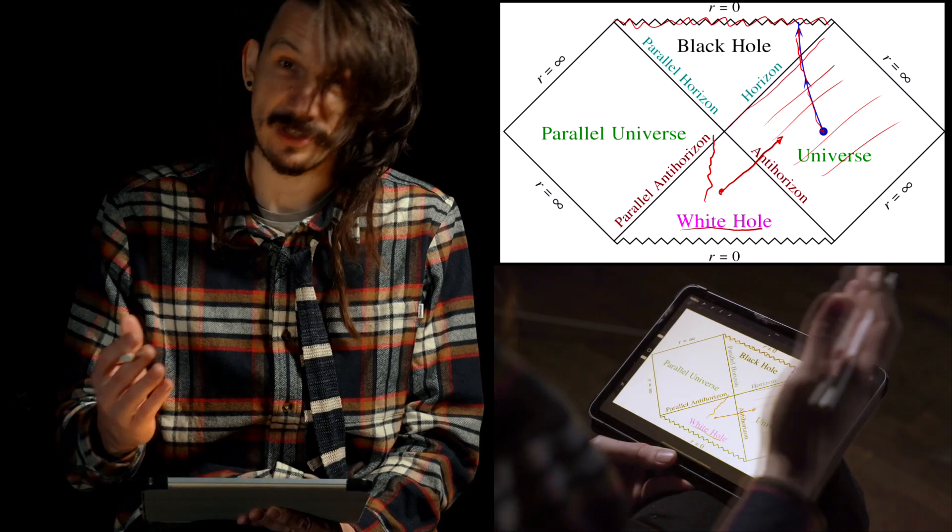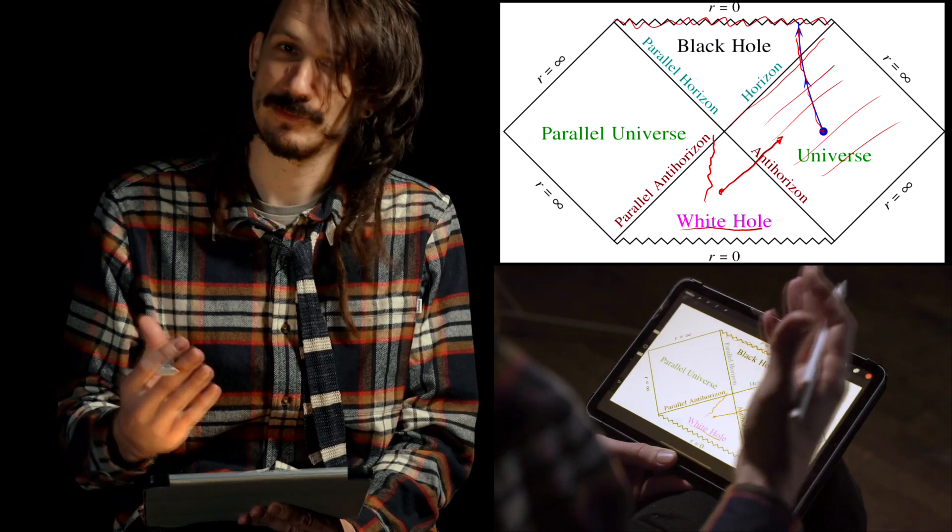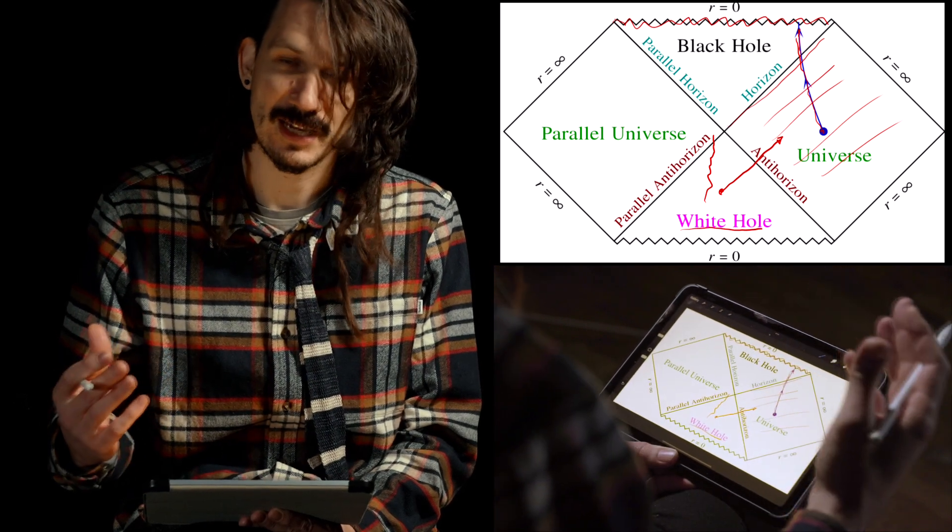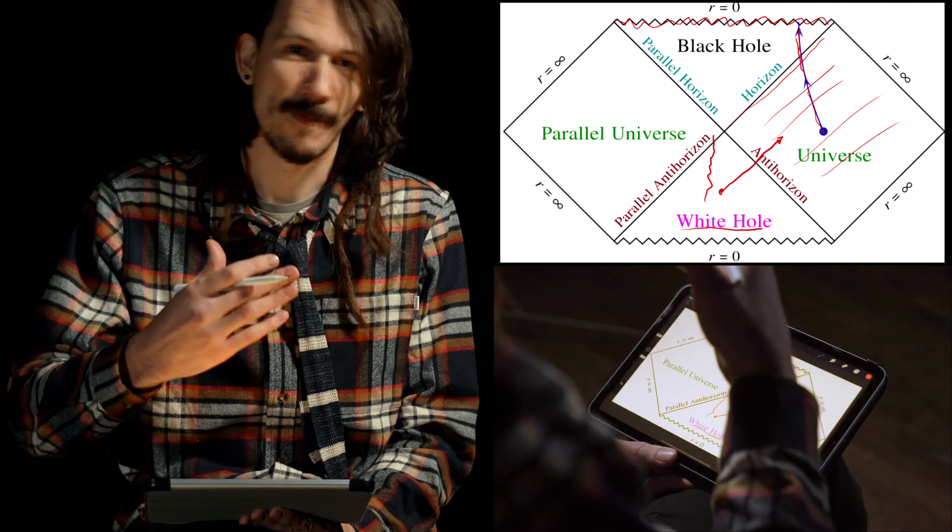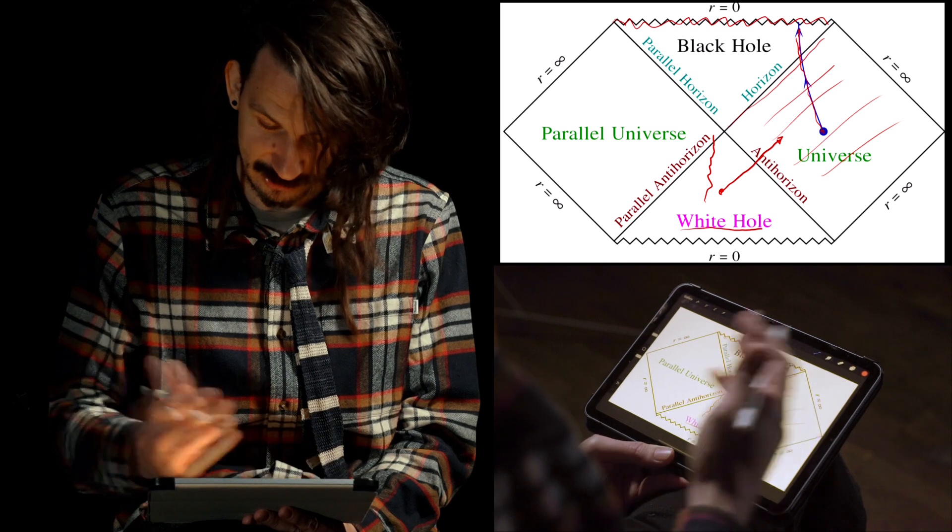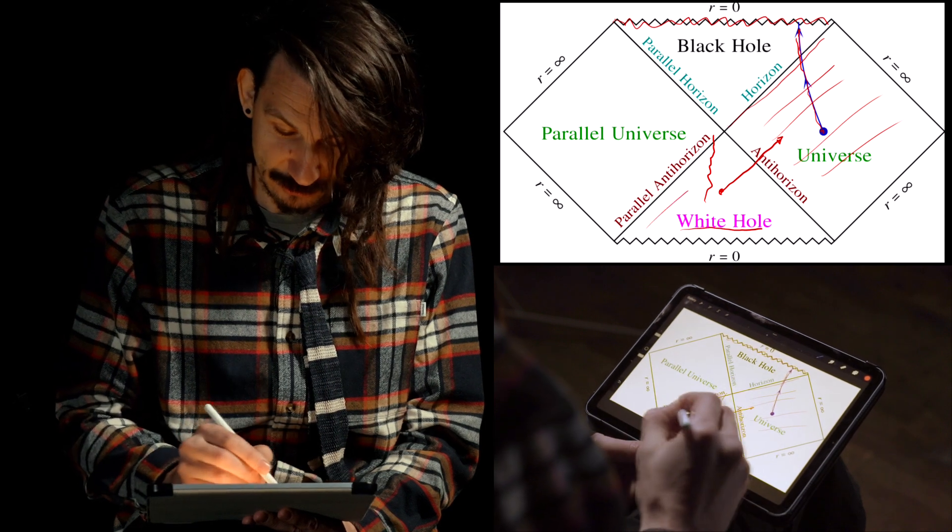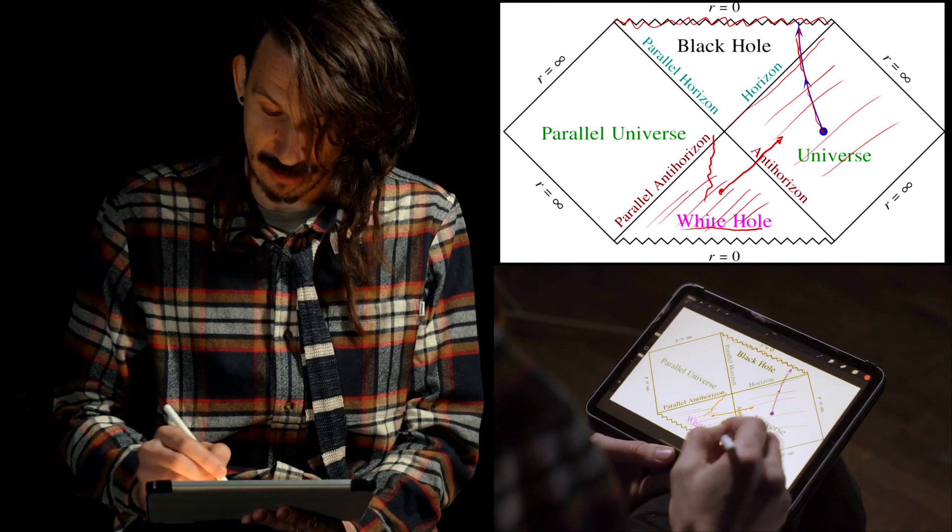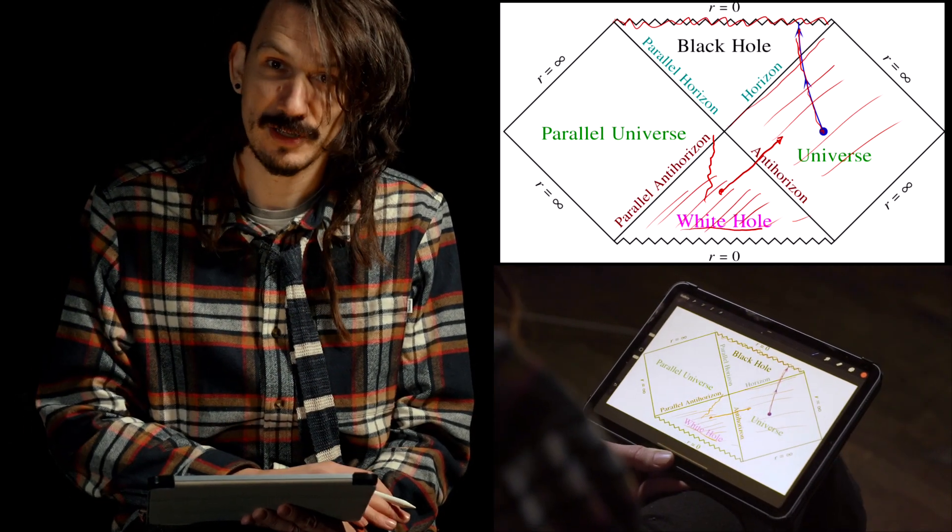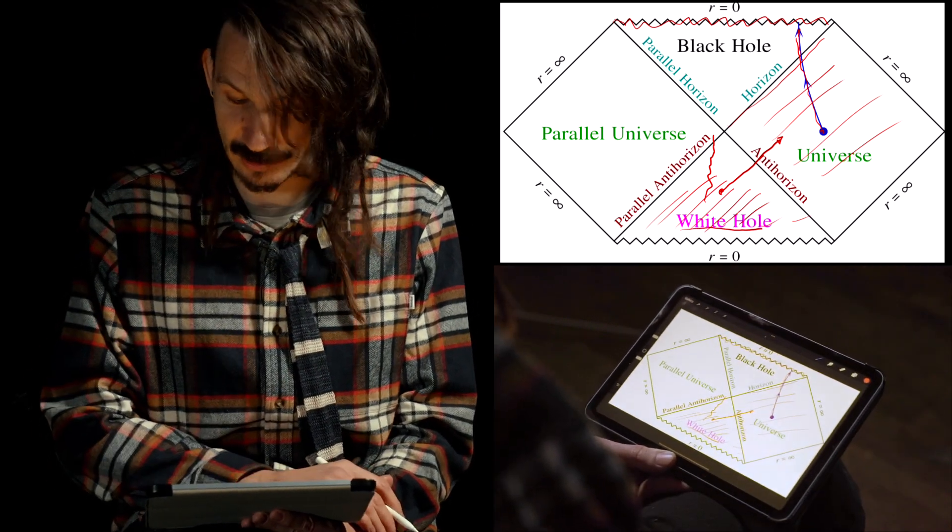If these white holes would exist in reality, that would mean that we would be looking sometimes into the sky and we would see regions of space and time that would all of a sudden expel many different things, including perhaps buses and airplanes and spaceships. But we have never seen that happening and therefore we think that this region here does not actually exist, even though it is a mathematical extrapolation of one of the solutions of Einstein's equations, which is the Schwarzschild black hole.